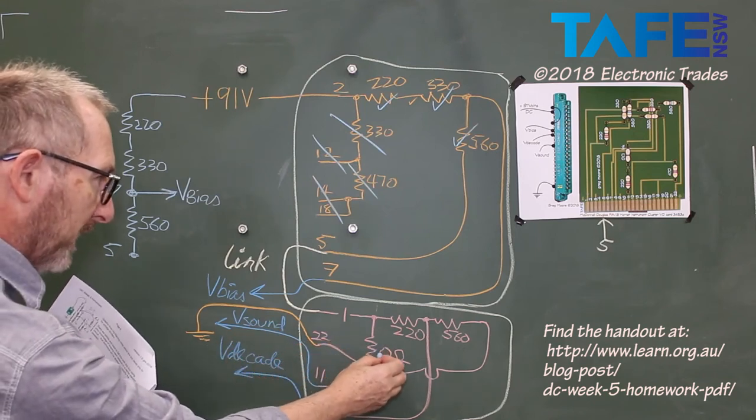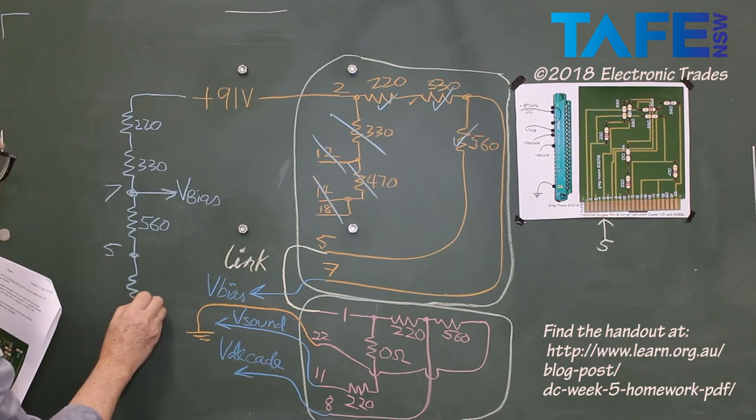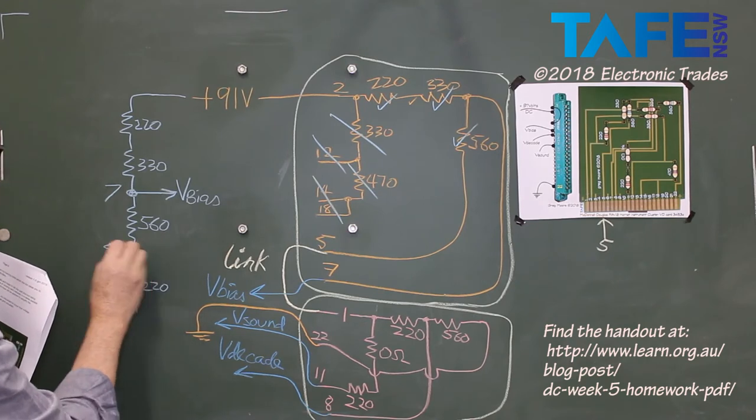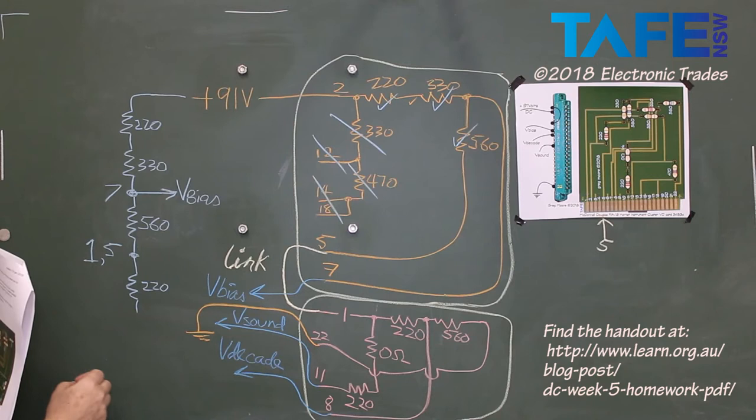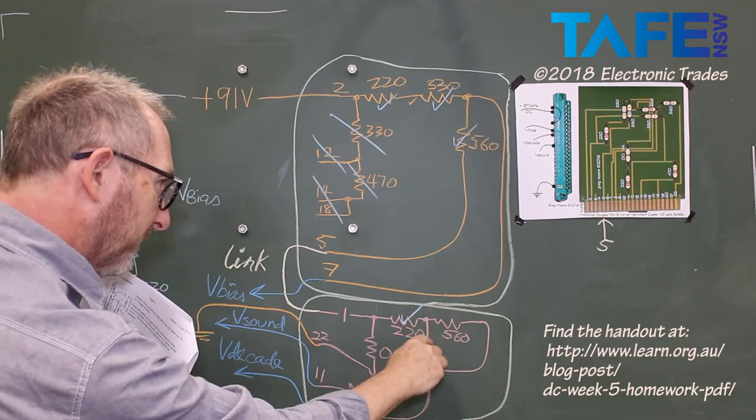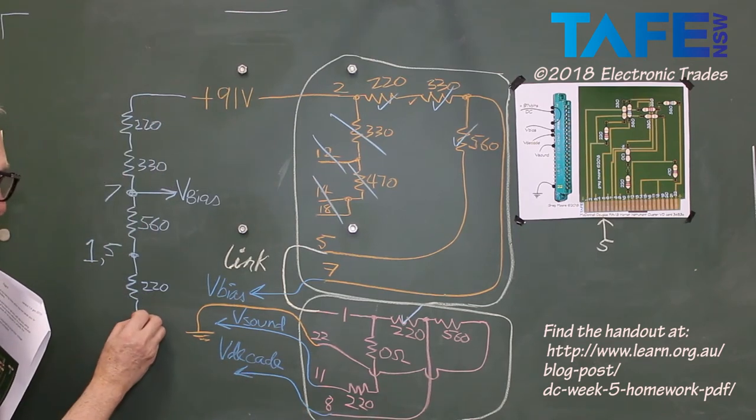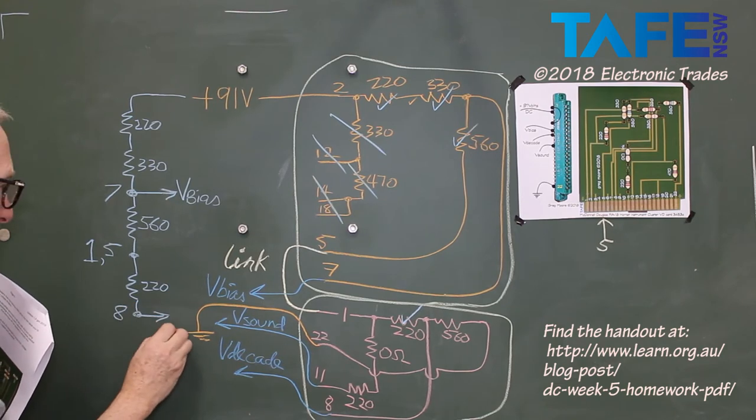And pin 1 goes through a 220. I'll put pin 1 there, pin 1 and pin 5. 220. I've done that. After the 220, we come out to pin 8. V-decade.